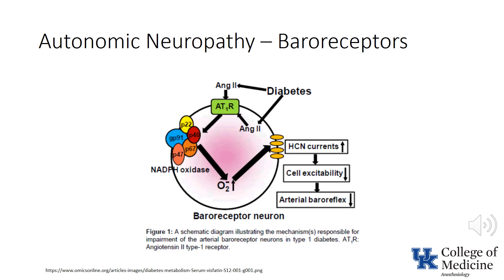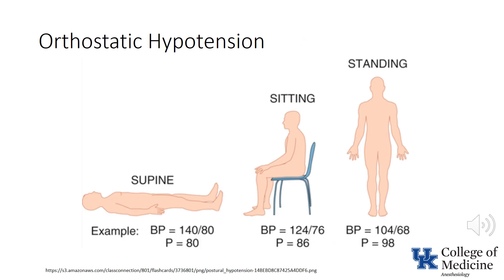Baroreceptor function is compromised in the presence of autonomic neuropathy, due to damaged vasoconstrictor fibers and ineffective cardiovascular reactivity. Orthostatic changes in blood pressure and heart rate are another indicator of cardiovascular autonomic neuropathy. Failure of heart rate to respond to exercise is indicative of significant cardiac denervation and is probably associated with decreased exercise tolerance. Finally, autonomic neuropathy is associated with dysrhythmias that may be responsible for sudden death.